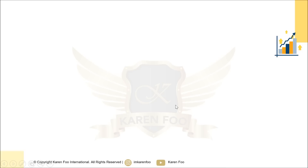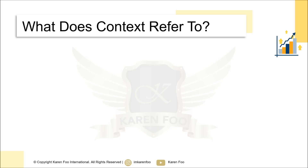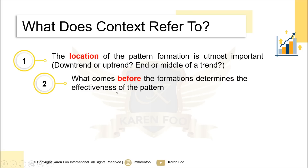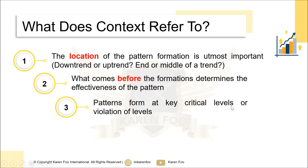Context is very important. The location of the pattern formation matters — do you see that signal on a downtrend, an uptrend, at the end of the trend, or in the middle? What comes before the signal determines whether the signal is effective. Context also means whether this pattern forms at critical levels, after a breakout, before a breakout, or on top of a moving average.